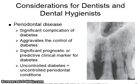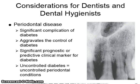Considerations for dentists and dental hygienists regarding periodontal disease: there are significant complications with diabetes. Periodontal disease aggravates the control of diabetes. Significant prognostic or predictive clinical markers exist linking periodontitis and diabetes. Uncontrolled diabetes equals uncontrolled periodontal conditions.